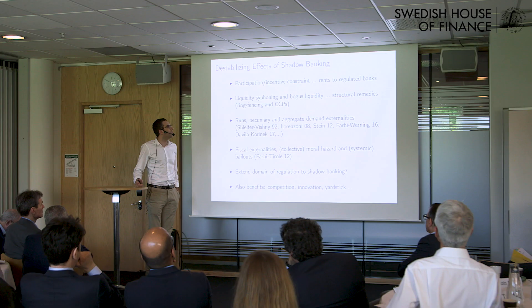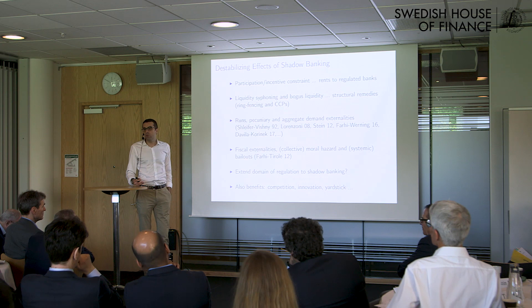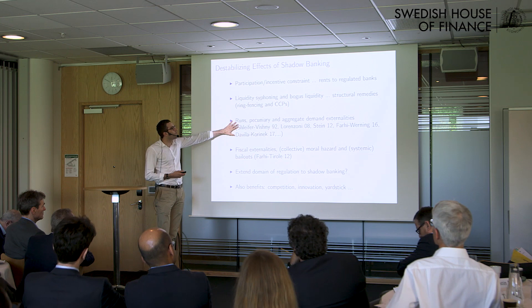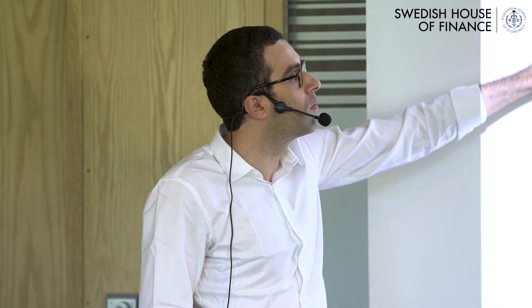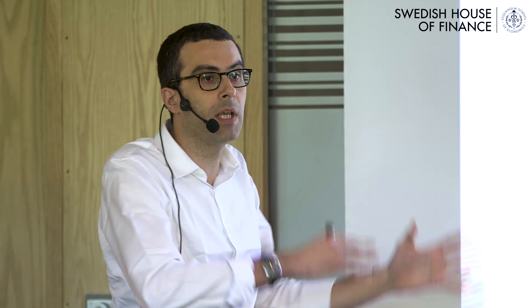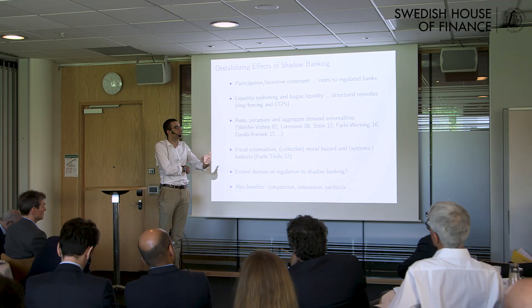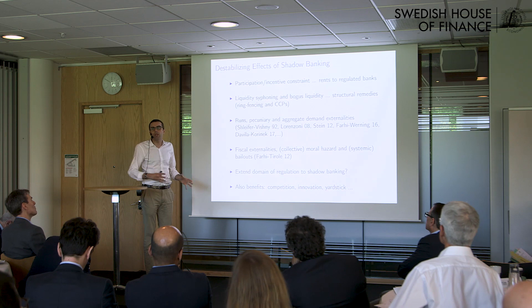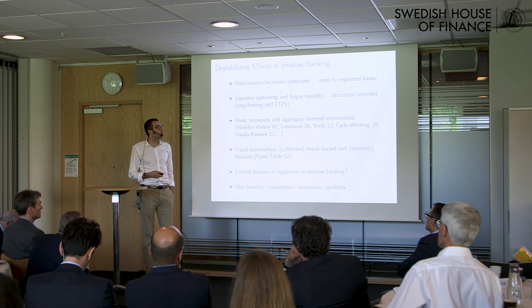One way to address this is through structural remedies: ring fencing between the traditional and shadow banking sectors and the introduction of central clearing counterparties. The shadow banking sector is also creating the possibility of runs, pecuniary and aggregate demand externalities, and fiscal externalities through bailouts. The more activities migrate to the shadow banking sector, the more the government has to intervene ex-post — which can also destabilize the traditional banking sector.